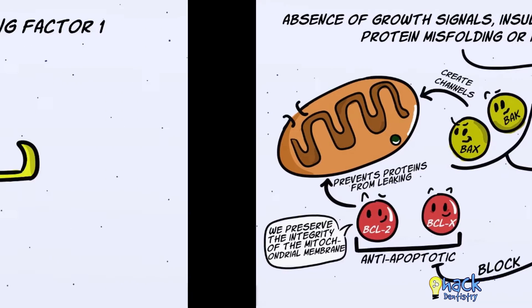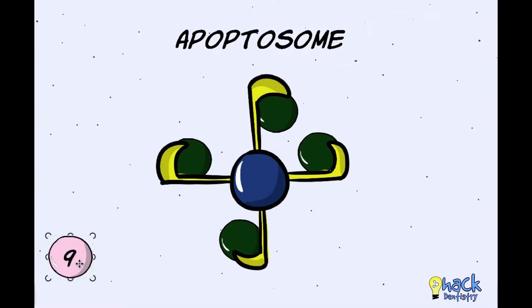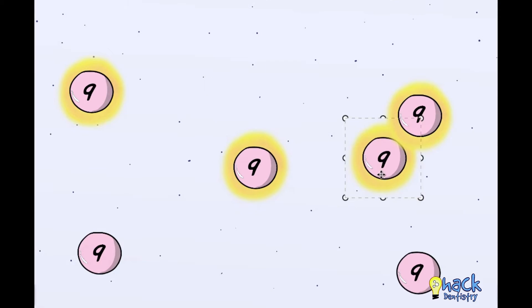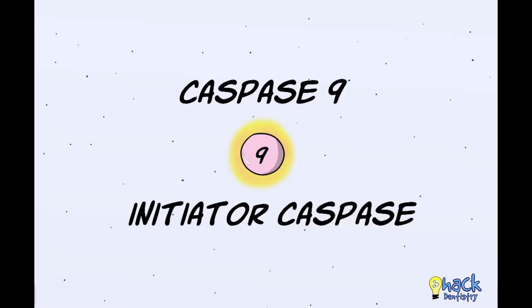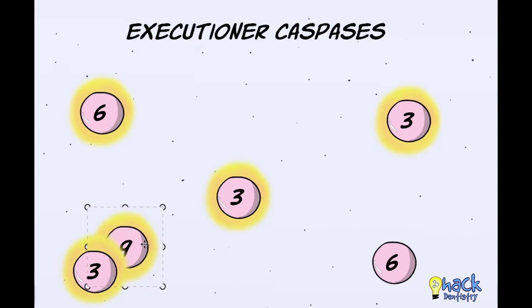Cytochrome C in the cytoplasm binds with a protein called apoptosis activating factor 1 to form a complex called the apoptosome. This complex binds with caspase-9 and begins to cleave and activate adjacent caspase-9 molecules. Caspase-9 is an initiator caspase, and activated caspase-9 molecules activate executioner caspases like 3 and 6, leading to apoptosis of the cell.